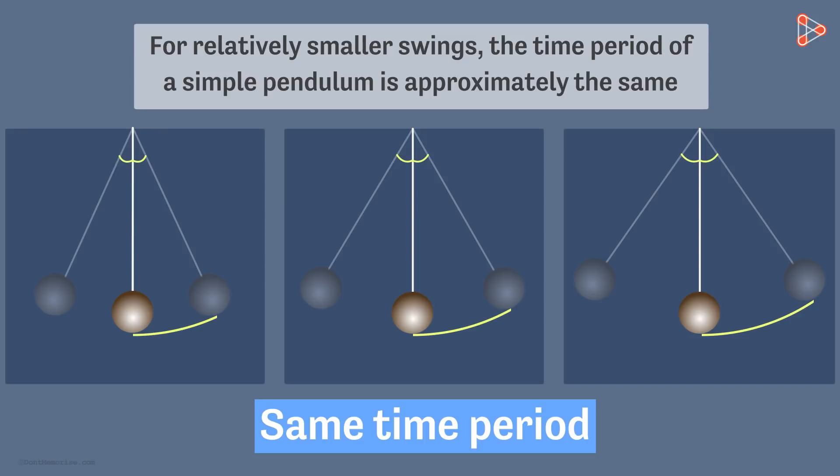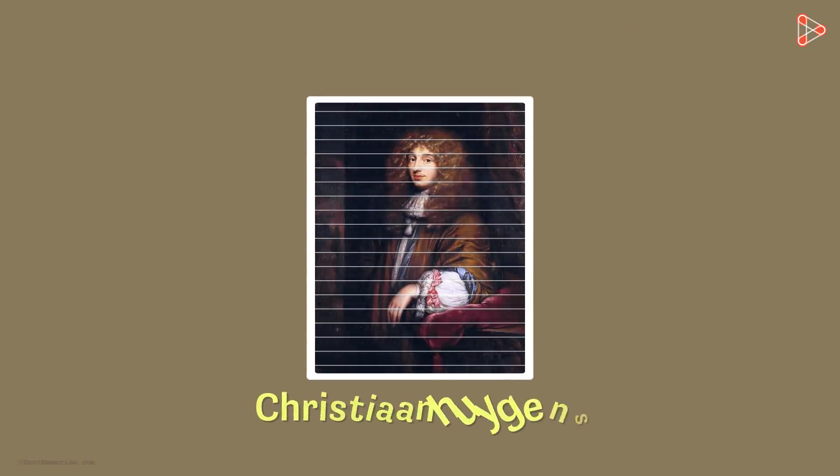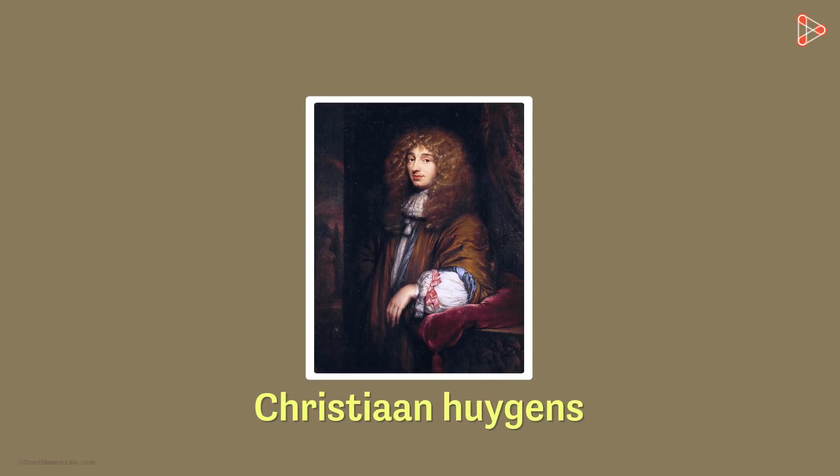As I told you, this property was first found out by Galileo. Christiaan Huygens used this property to invent what's called the pendulum clock.